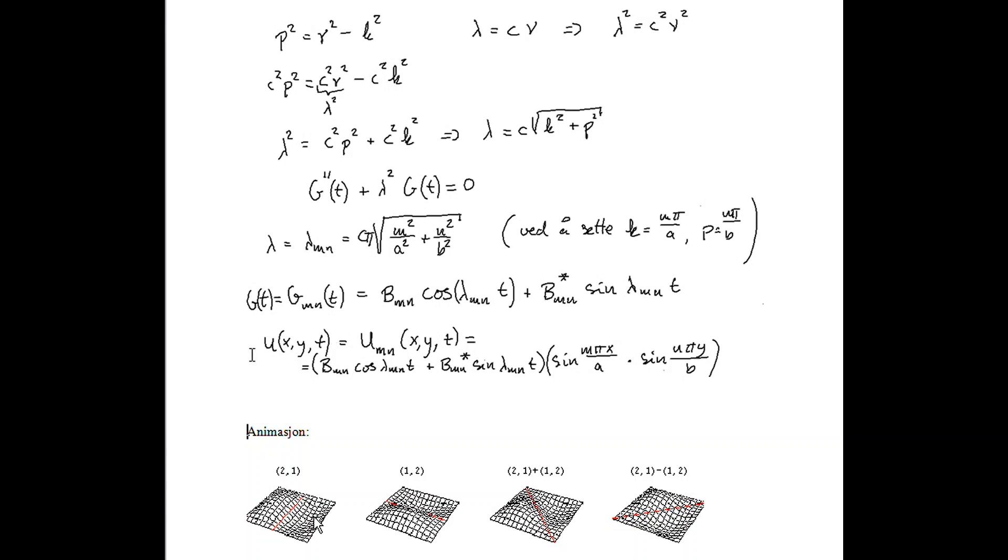We call it U(X, Y, T), and it's dependent on the integer values m and n. And it's given by this expression. And this expression is also called an eigenfunction.